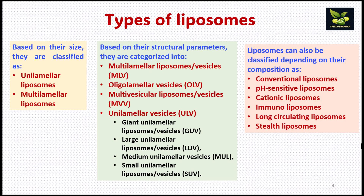In unilamellar, again on the basis of size, they are small, medium, large, and giant. Liposomes can also be classified depending on their composition, that is depending on their modifications. When there is no modification, they are conventional liposomes; then there can be pH-sensitive liposomes, cationic, immunoliposomes, long-circulating liposomes, and stealth liposomes.